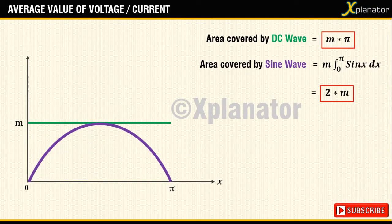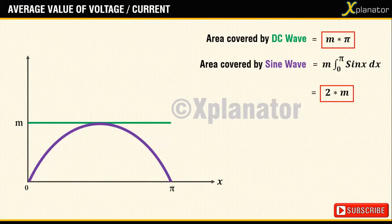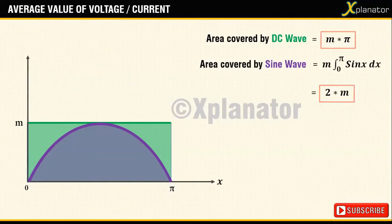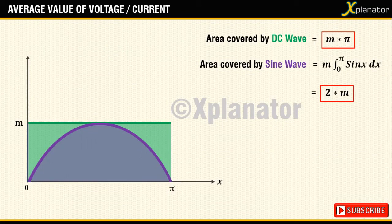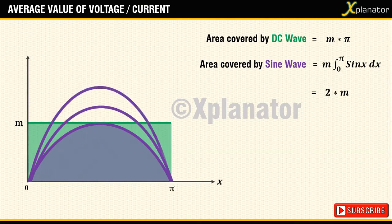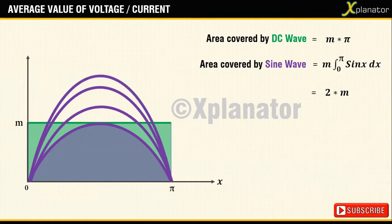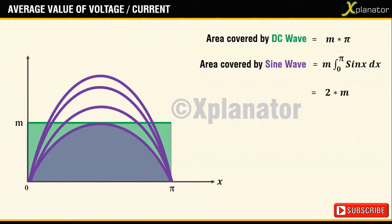So what to do if you want to get the same area as that under the DC. The time period under consideration is fixed. We cannot change it. The only possible solution available is to increase the magnitude of the AC wave. Now we can definitely do this till we find area occupied by both graphs to be equal.